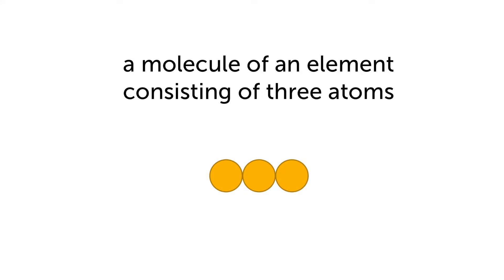When two or more atoms are chemically combined, we call them a molecule. We show them being chemically combined by joining these circles together. What you see here is a molecule of an element. It is still considered an element because all the atoms are of the same type.